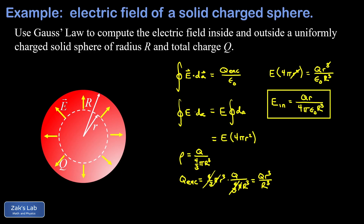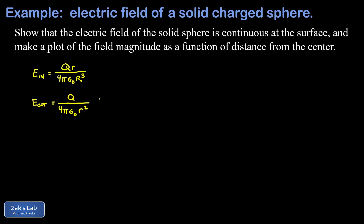To summarize: the electric field strength is zero at the center of the sphere (when r = 0), then grows linearly with distance from the center until we reach the surface. Inside: E_in = Qr / (4πε₀R³). Outside, it behaves like a point charge: E_out = Q / (4πε₀r²).